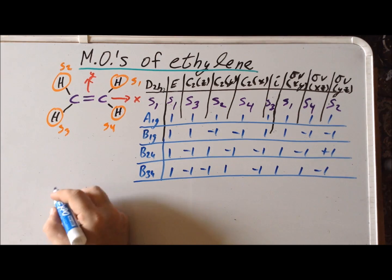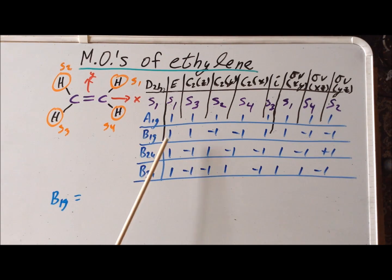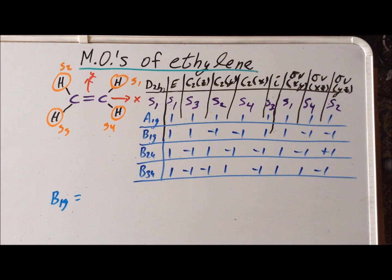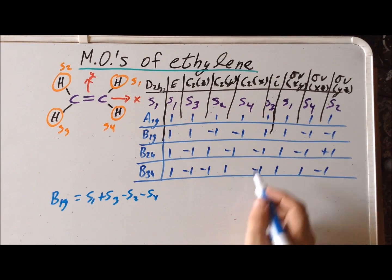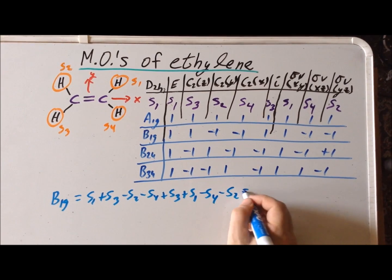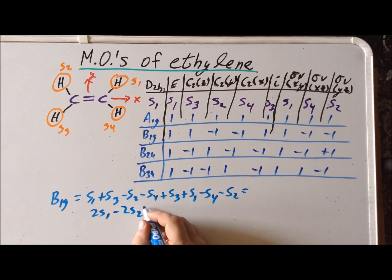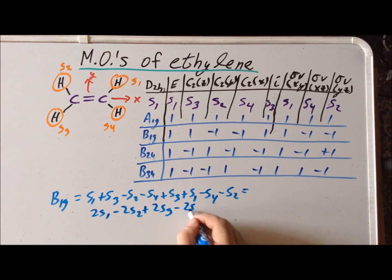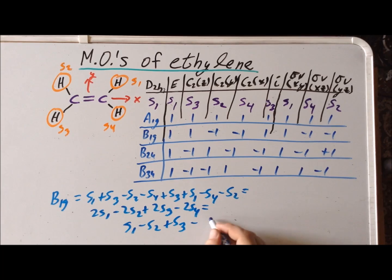Next, we look at the B1g molecular orbital. Multiplying each character times the term in the same column: S1 + S3 − S2 − S4 + S3 + S1 − S4 − S2, giving 2S1 − 2S2 + 2S3 − 2S4. This reduces to lowest terms as S1 − S2 + S3 − S4.